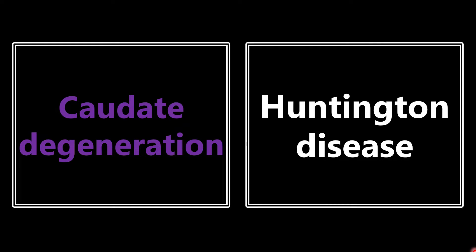Caudate degeneration. There are going to be questions on the boards where they ask about specific parts of the brain and want you to associate that with a specific neurotransmitter or disease process. In this case, if you see caudate degeneration, think Huntington disease.